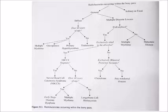In a diffuse lesion, if the patient is over 40 years of age, the differential diagnoses include multiple myeloma, osteoporosis, and primary hyperparathyroidism. If the patient is below 40 years of age (a young patient), it can be thalassemia.